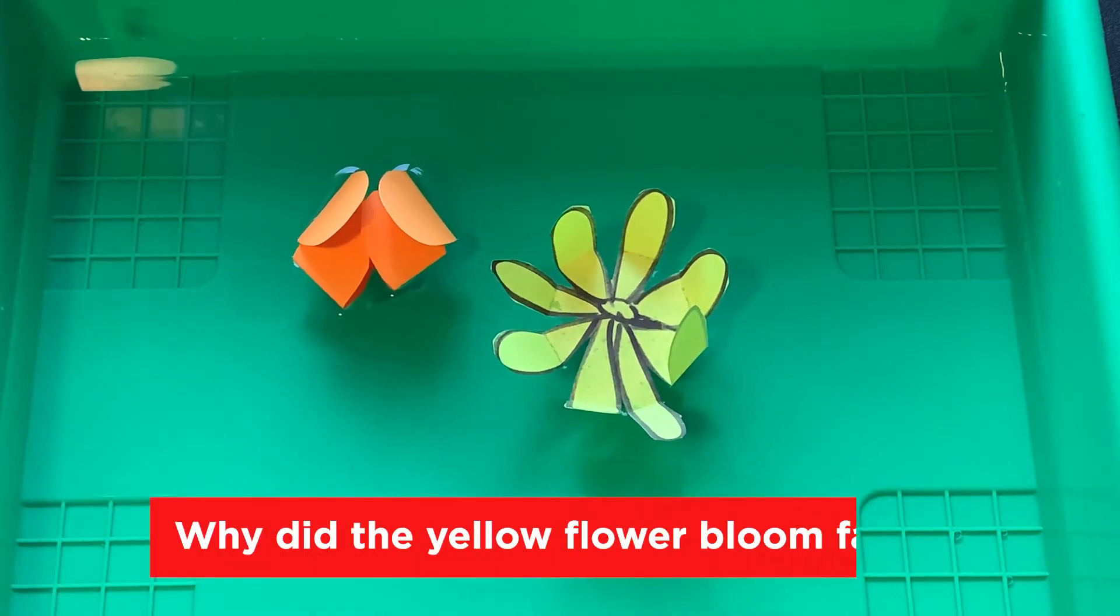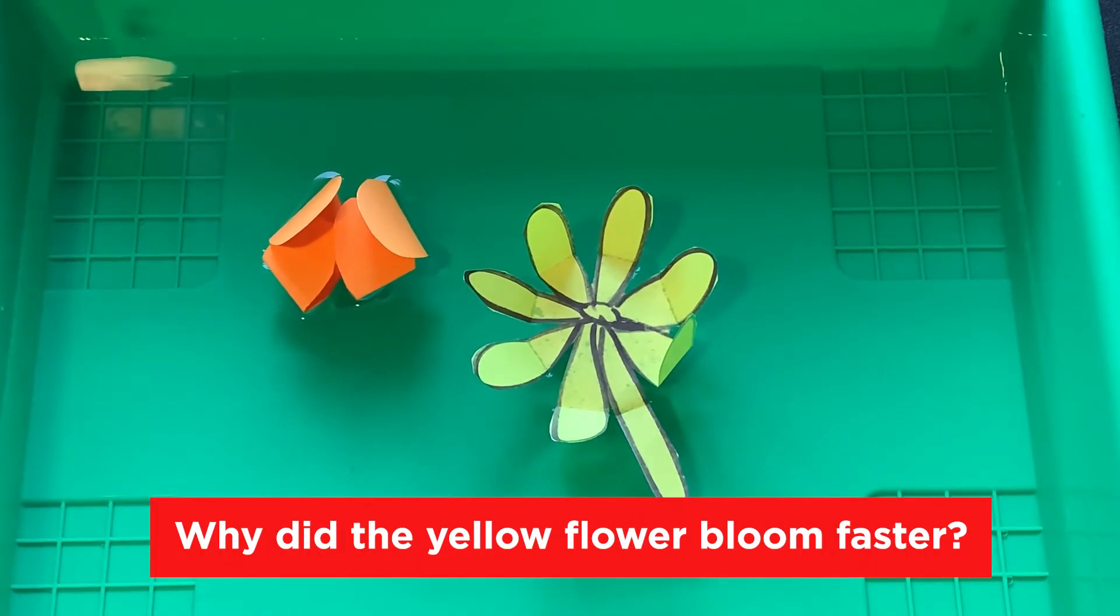Why do you think the yellow flower bloomed faster than the orange? Was it the type of paper? Was it the number of petals? Maybe the size of the flower?